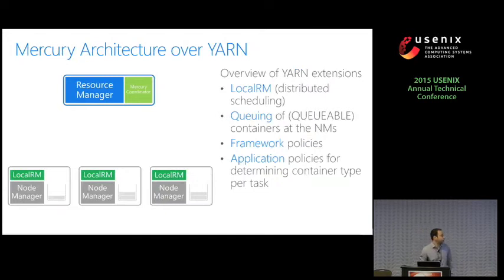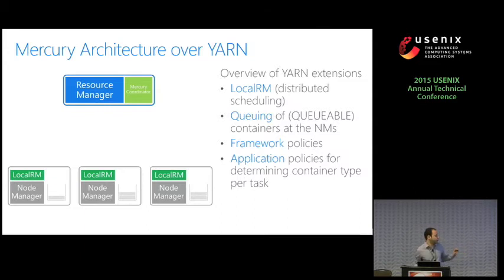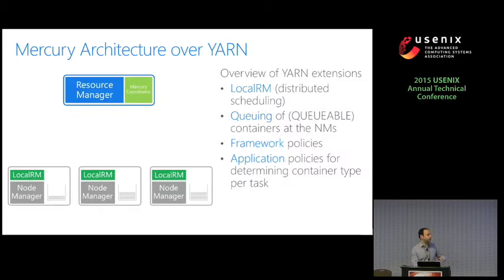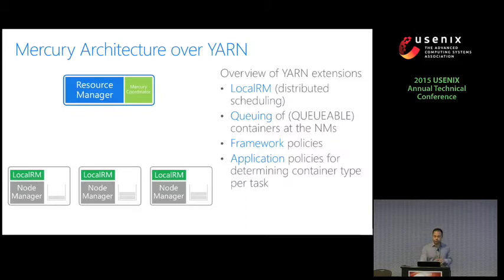We have implemented Mercury on top of YARN by extending it. The basic differences are: first, in each node manager we have added a local RM responsible for distributed scheduling, and we have also added queues at each node manager. We kept the centralized resource manager of YARN, and we added the Mercury coordinator for loose coordination of the distributed scheduler. We also have framework policies and application policies for determining the container type for each task, which I will discuss in upcoming slides.